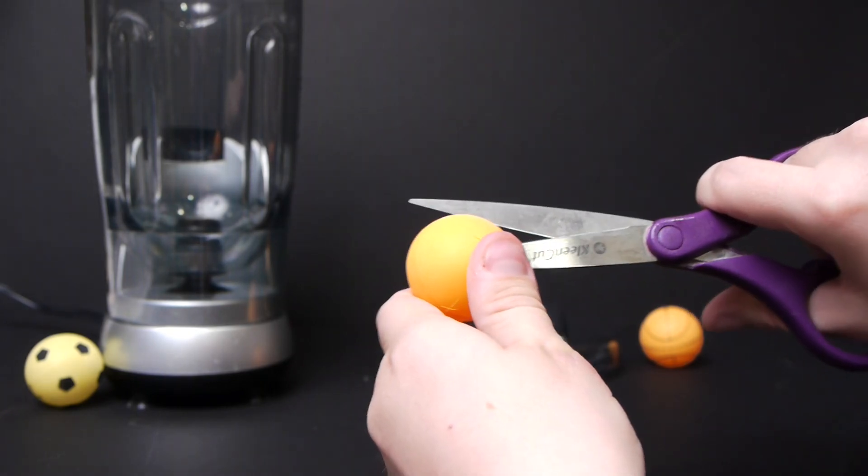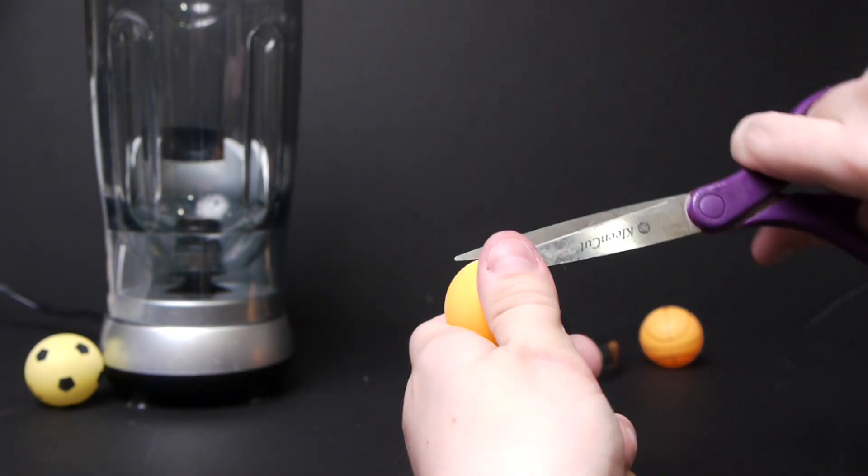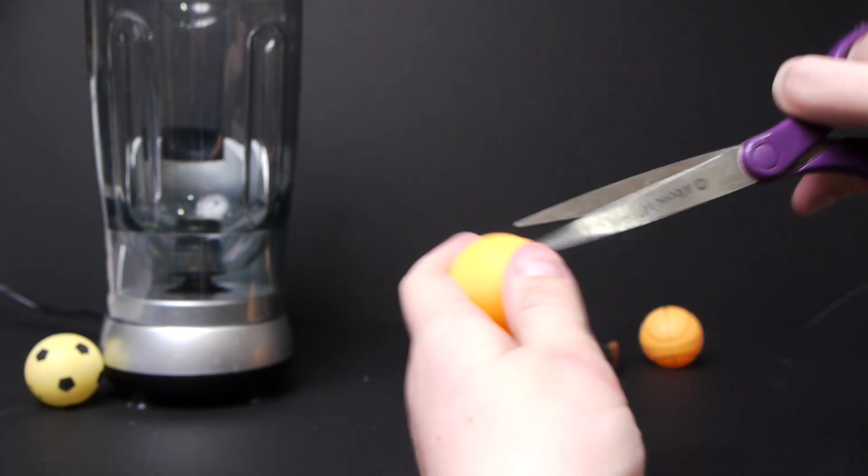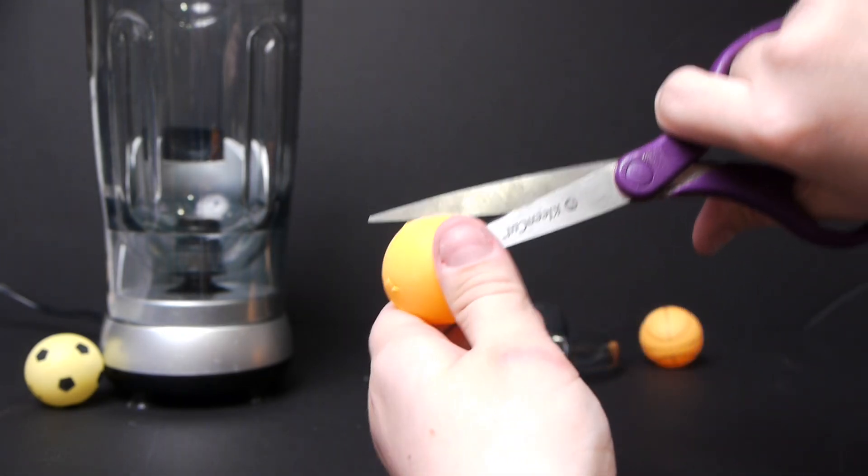So take your ping pong ball and poke a small hole in it, and then proceed to cut it in half. If you want the best effect, you'll do this with about three to four ping pong balls.